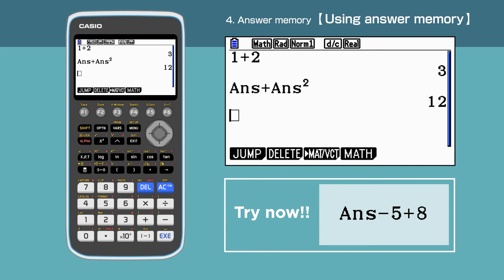Answer minus 5 plus 8. In this case, we only need to enter minus 5 plus 8 as the calculator enters the previous answer for us automatically. The answer for the question is 15.